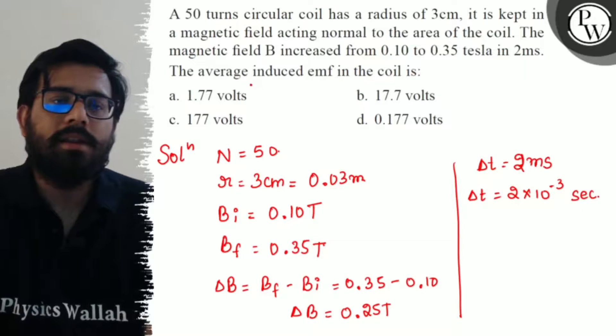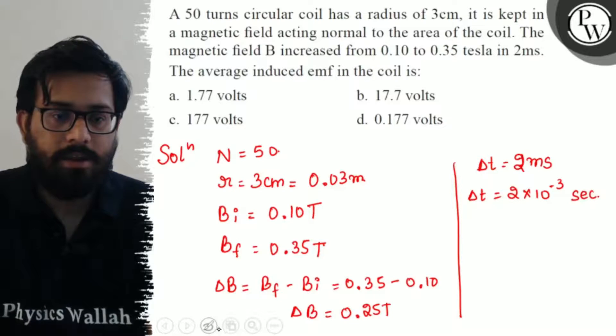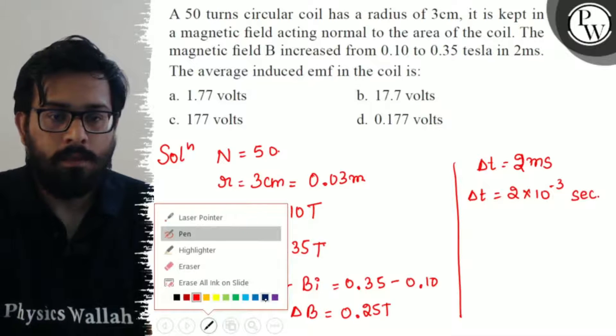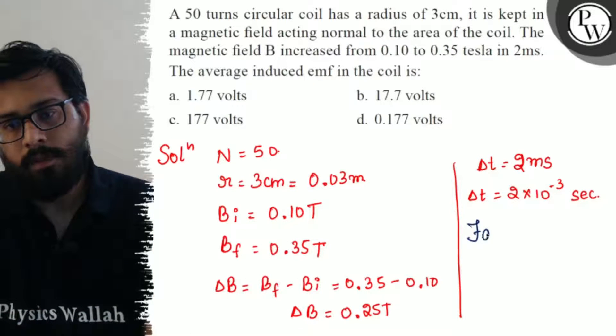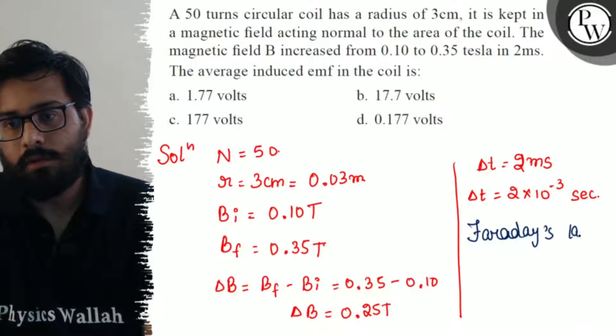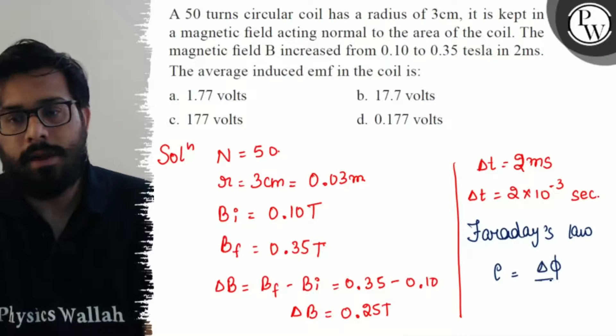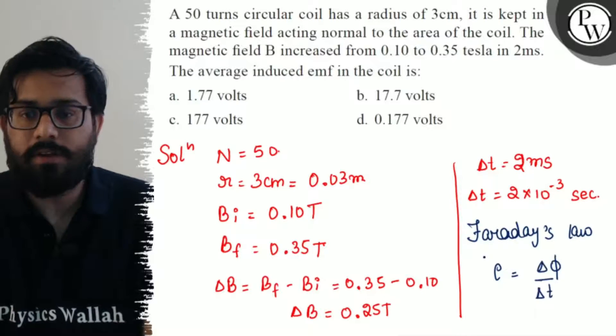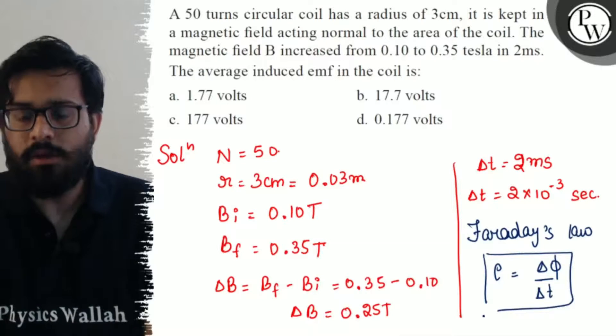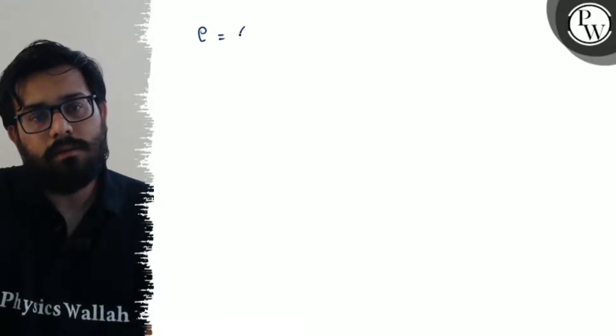Now we have to calculate the average induced EMF from Faraday's law. The induced EMF comes out to be delta phi by delta T. This is the average induced EMF. Let us move on to the next page. E equals delta phi by delta T.